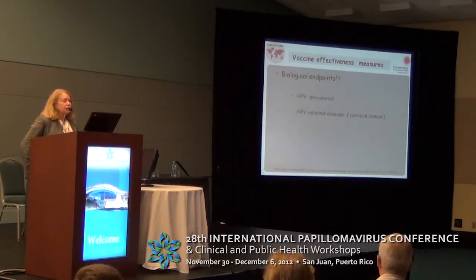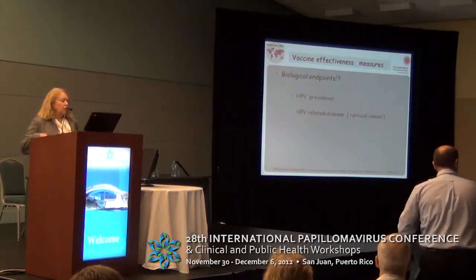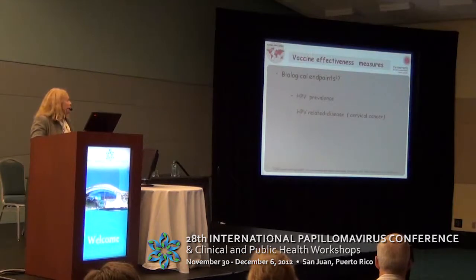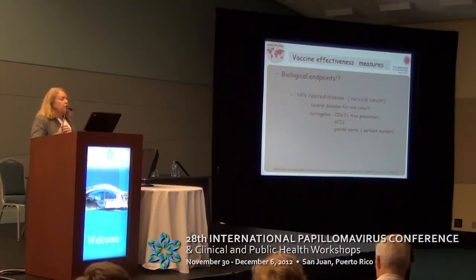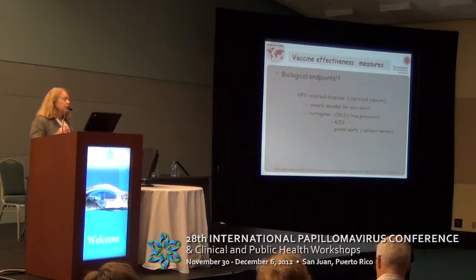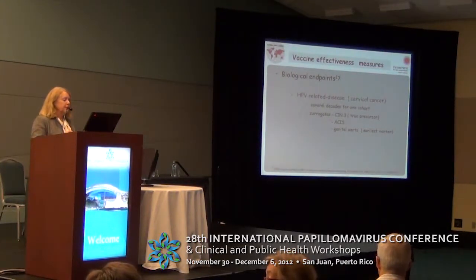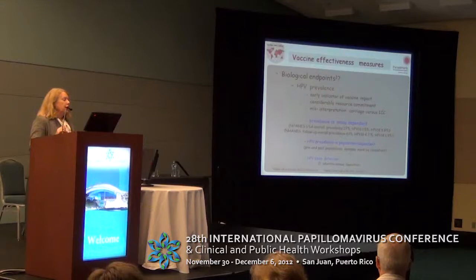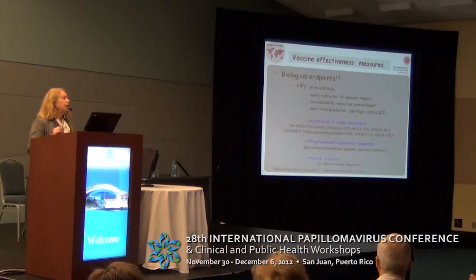That brings me to vaccine effectiveness and what we should be measuring. We can look at biological endpoints — that's really what has been looked at in the trials. Obviously cancer is too late and it will take decades to see the effect. So we've used surrogates such as CIN3 or ACIS as endpoints. One of the earliest endpoints to expect to see change, due to the short incubation period, is genital warts. We can also use virological endpoints and look at HPV prevalence as an early indicator of vaccine impact. It does take considerable resources to do this and one must be careful about how it's done.